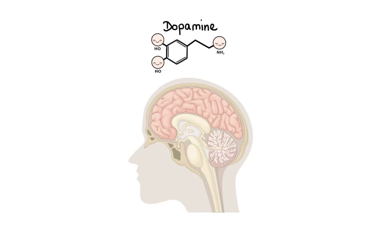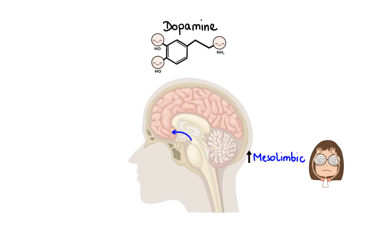Dopamine has four major pathways by which it affects the brain. Number one, the mesolimbic pathway, which is thought to be hyperactive in schizophrenia and to mediate positive symptoms of psychosis such as delusions and hallucinations. Number two, the mesocortical pathway, which is thought to be underactive in schizophrenia and mediates negative psychotic symptoms such as loss of motivation and social withdrawal.